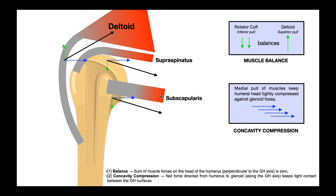A good example to start with is the subscapularis. Here's the muscular part in red, which originates on the subscapular fossa, and then the tendinous part runs up toward the lesser tubercle. When this muscle contracts, the scapula is the static part and the humerus is the mobile part. So the pull is directed toward the muscular part, meaning the line of pull of the subscapularis is this black arrow. This arrow has a vertical part — oriented downward — and a horizontal part — oriented medially. All rotator cuff muscles have a medial pull and an inferior pull on the humerus.